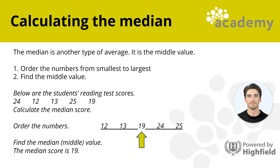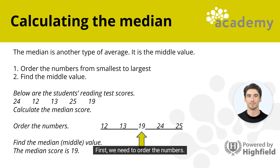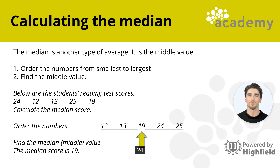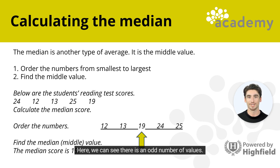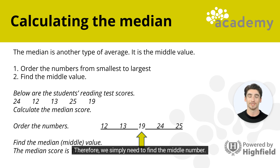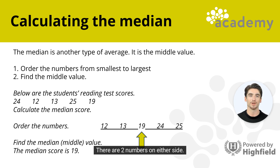Let's look at an example. Below are students' reading test scores: 24, 12, 13, 25 and 19. Calculate the median score. First, order the numbers from smallest to largest: 12, 13, 19, 24 and 25. There is an odd number of values — five values — so we simply find the middle number. The median is 19, with two numbers on either side.